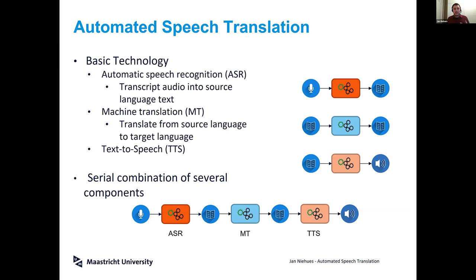Then there's machine translation, which deals with text: technology that is able to translate from one source language into another target language. This technology has been developed for quite a while but is still under development, with really huge improvements still being made. Finally, there's text-to-speech (TTS), which is the inverse of ASR: given text, we generate audio that conveys the same content.